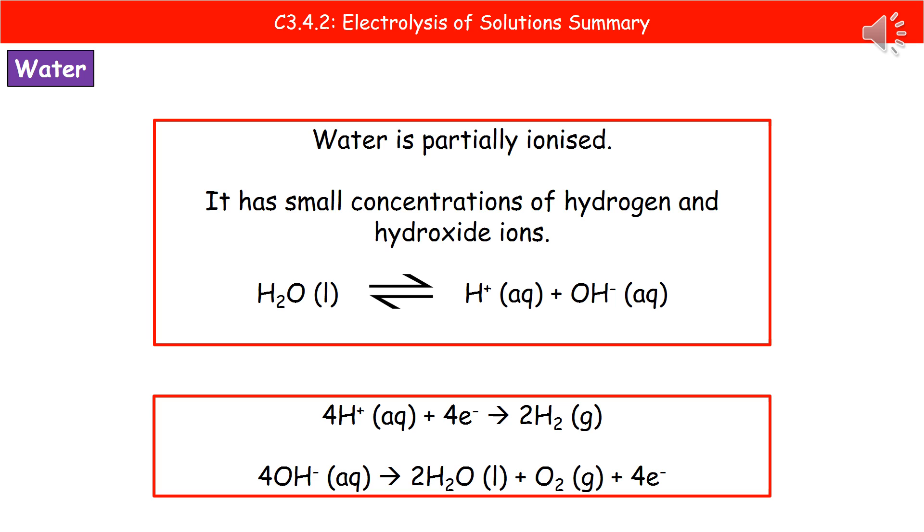At the anode, which is positive, the negative hydroxide ions lose their electrons when they contact the anode. As a result, we form two molecules of water, H2O, and oxygen gas. Don't forget to write in the four electrons—they can't cease to exist, they're just being transferred.